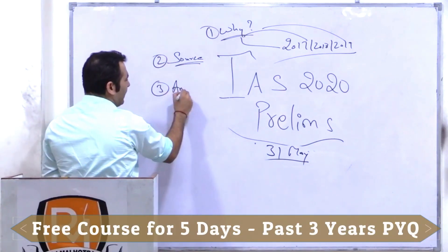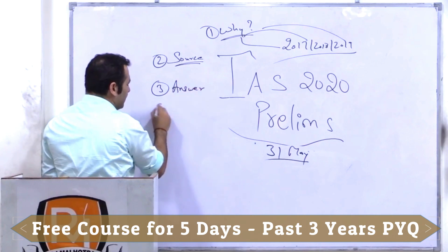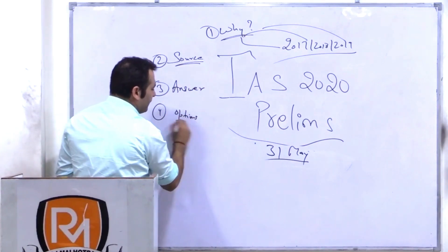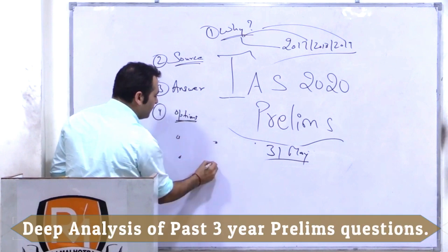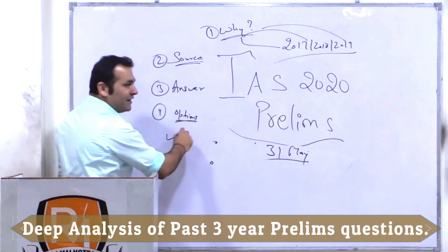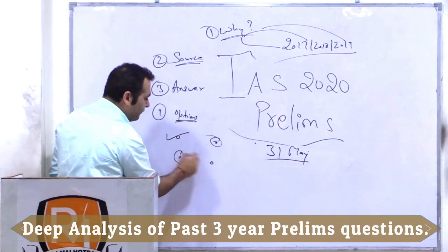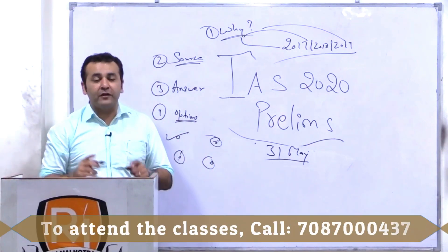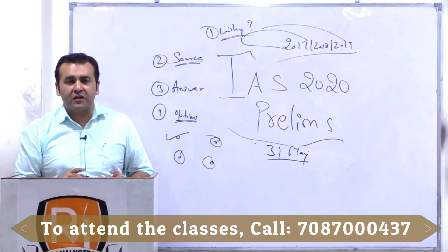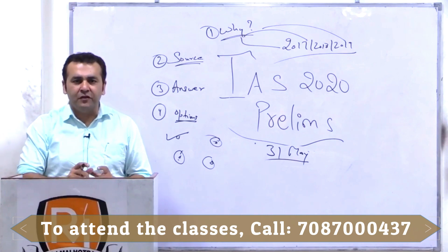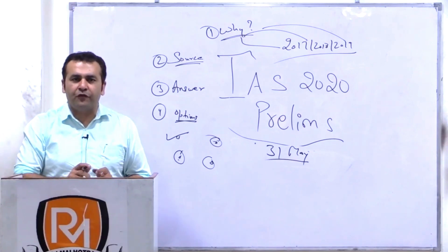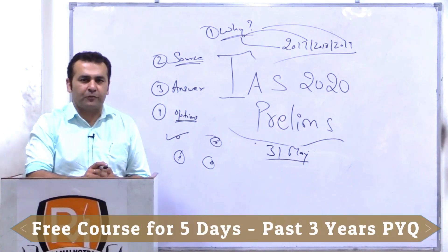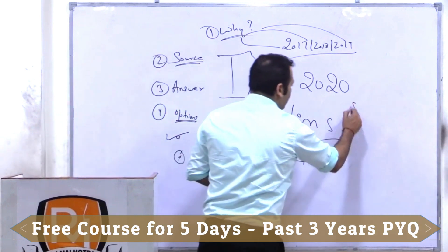What was the right answer, and then there are four options — every question has four options. If A was correct, then what was the relevance of B, C and D? So that you can always understand what kind of tricky options they give and how you have to find out the right option out of those four options.